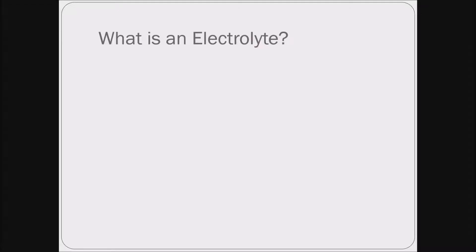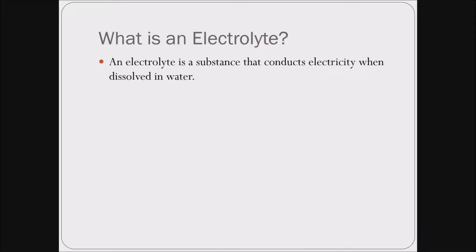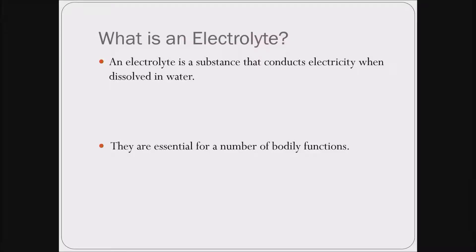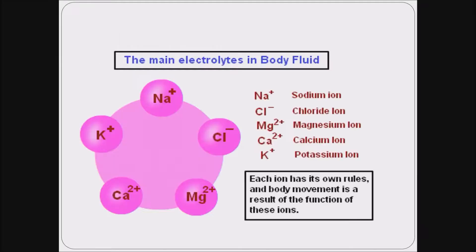What is an electrolyte? As the name suggests, an electrolyte is a substance that conducts electricity. When it dissolves in water, it gets charged — called ions, positive or negative — giving it the ability to travel across cell membranes, tissues and organs, thereby performing a number of bodily functions. Some of the electrolytes are sodium, chloride, magnesium, calcium and potassium.